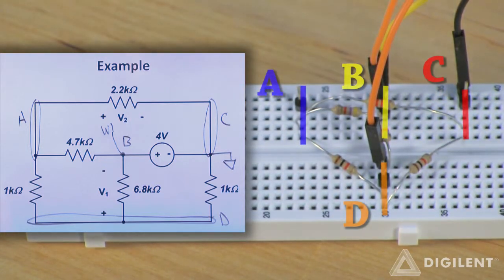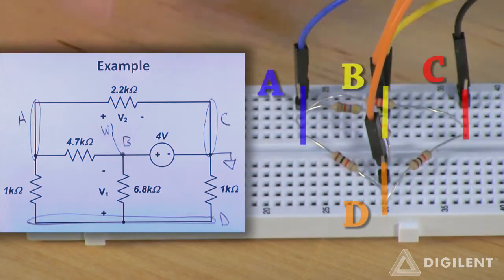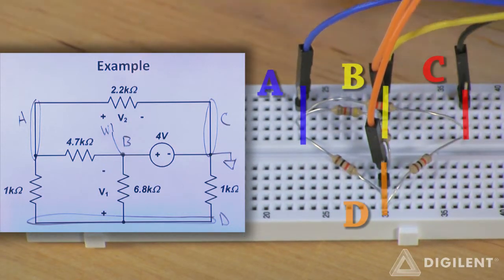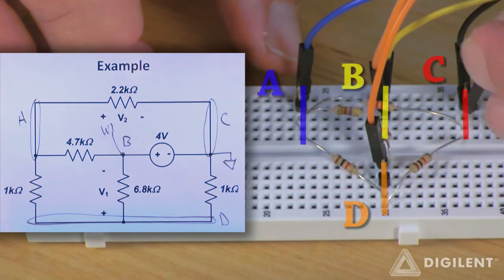I'll use channel 2 of the voltmeter to measure the voltage V2. For this measurement, node A is assumed to be at the higher voltage, so I'll connect the 1 plus terminal, the blue wire, to node A and the 1 minus terminal, the blue wire with the white stripe, to node C.